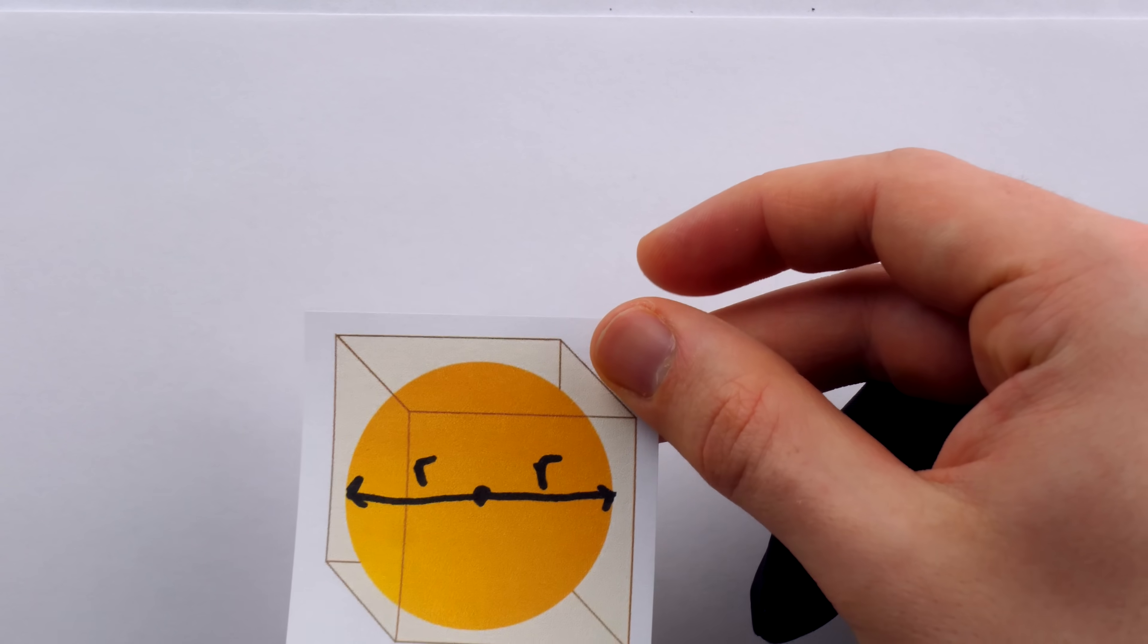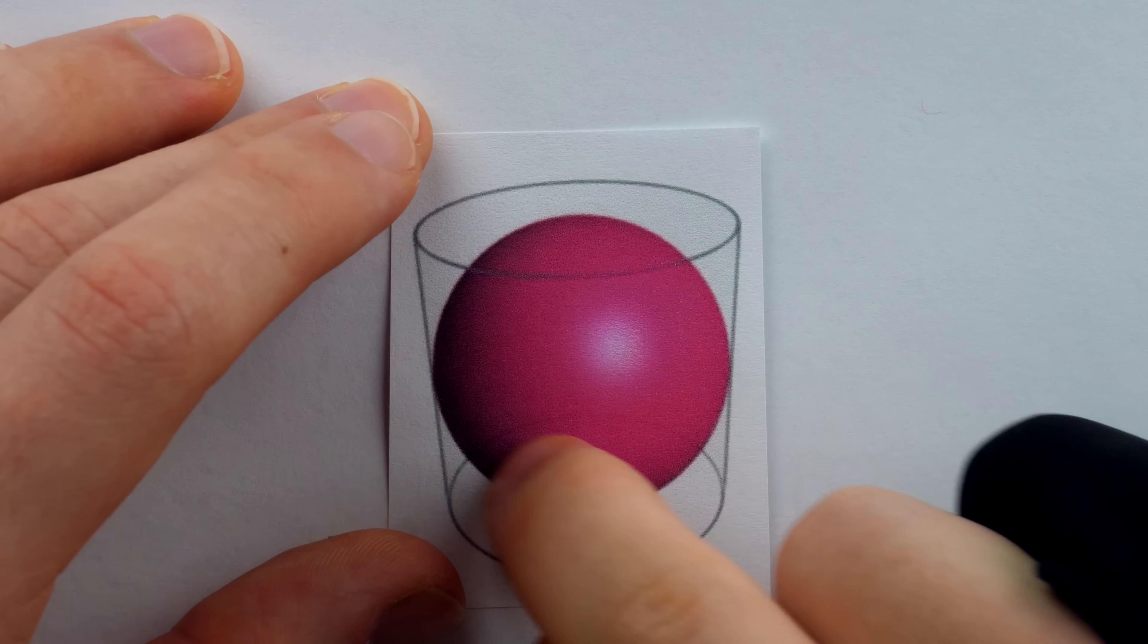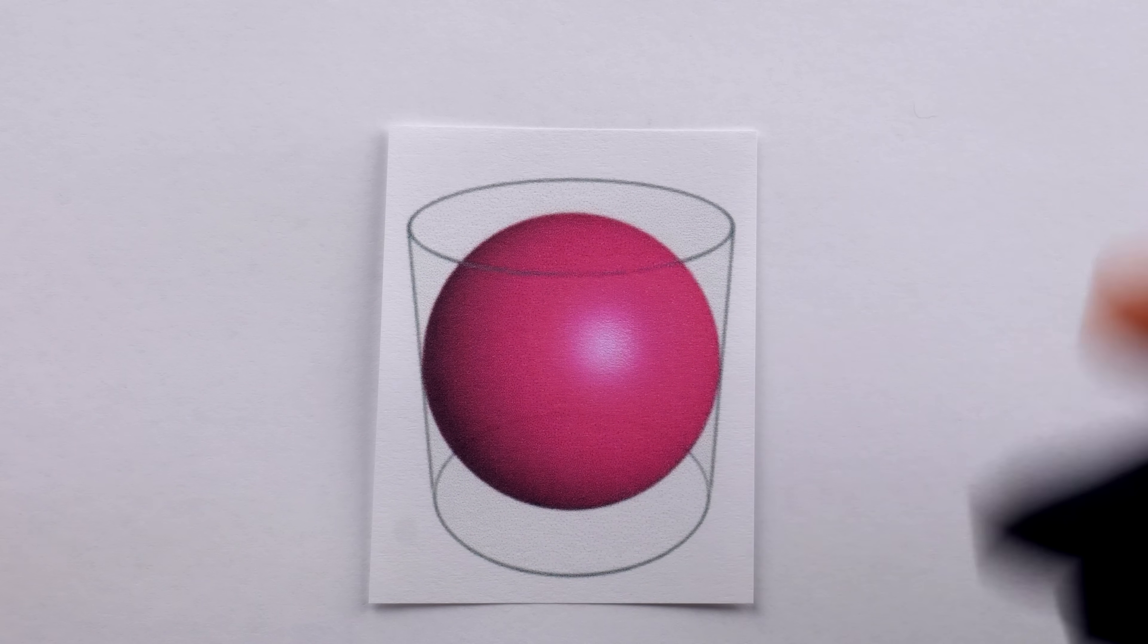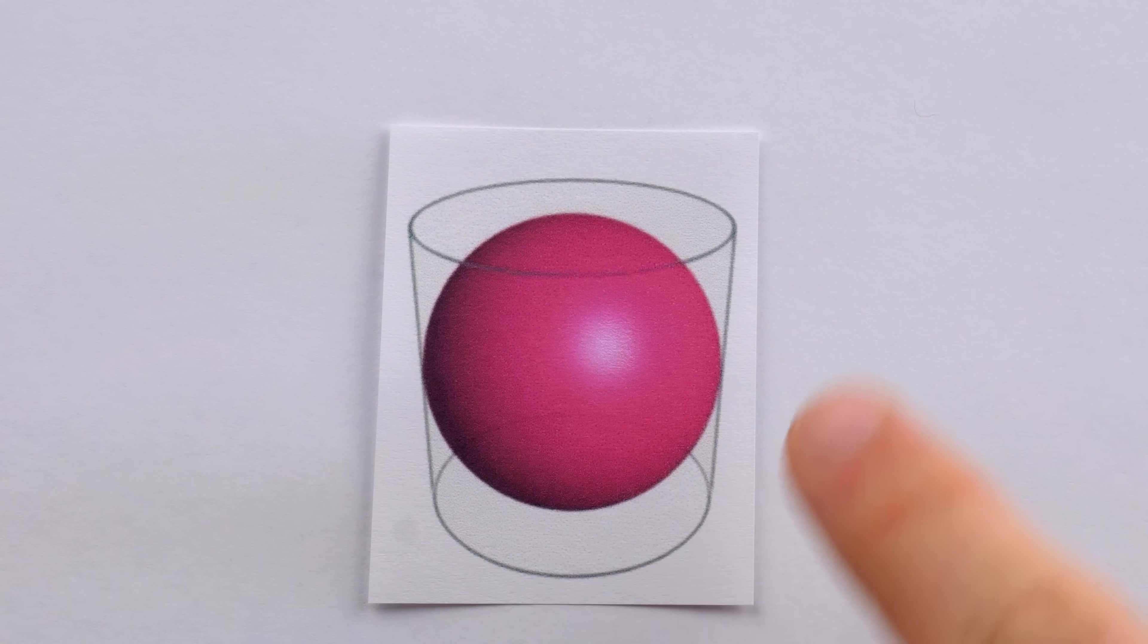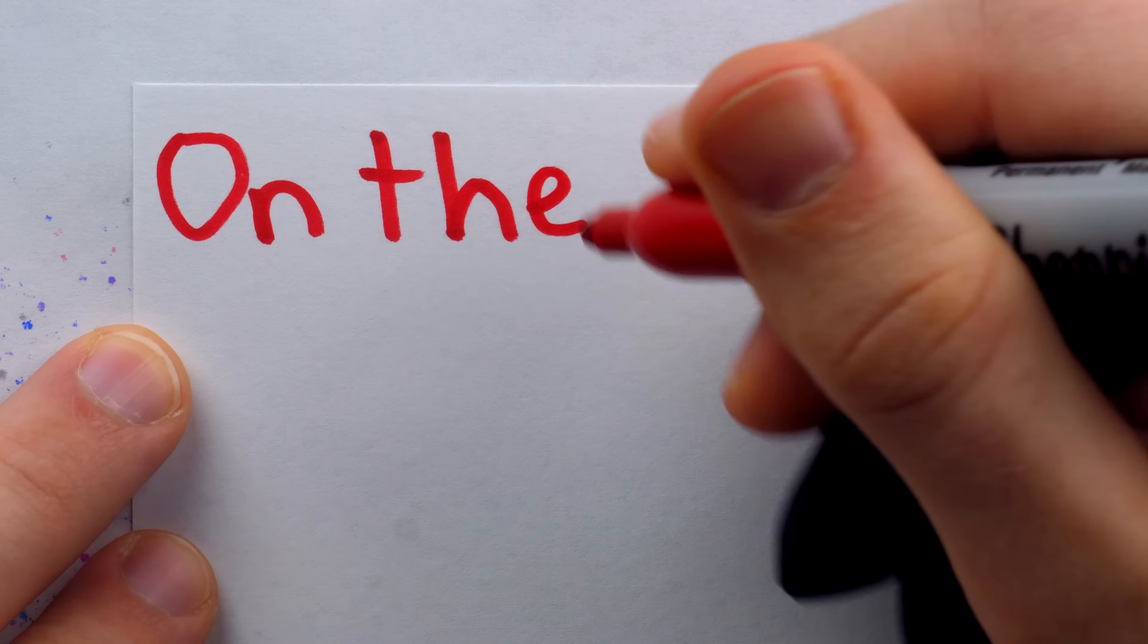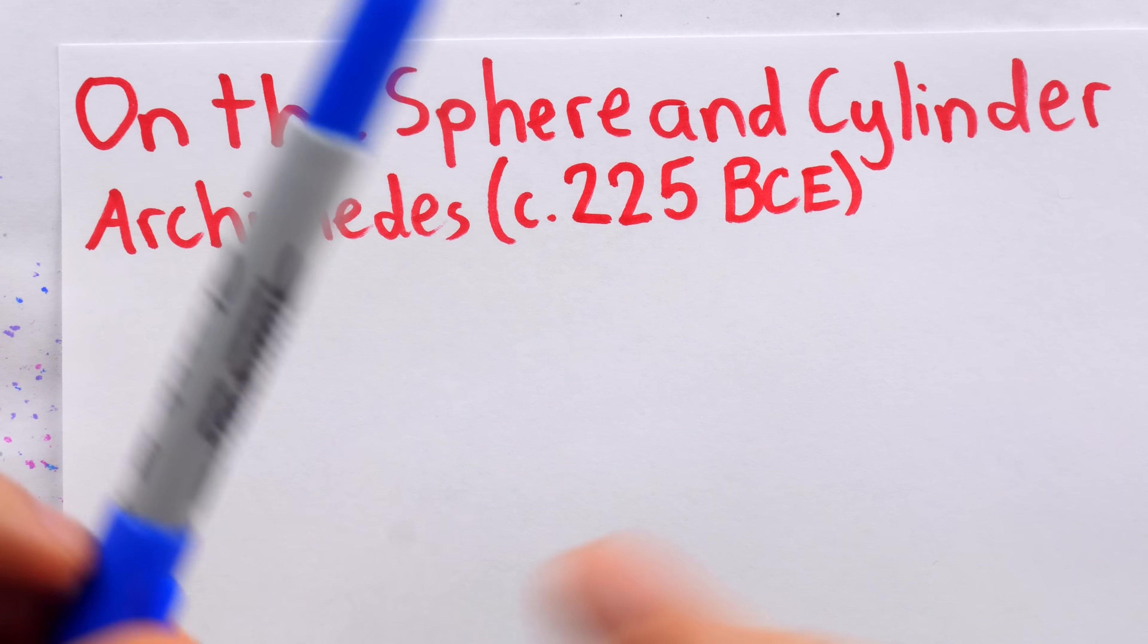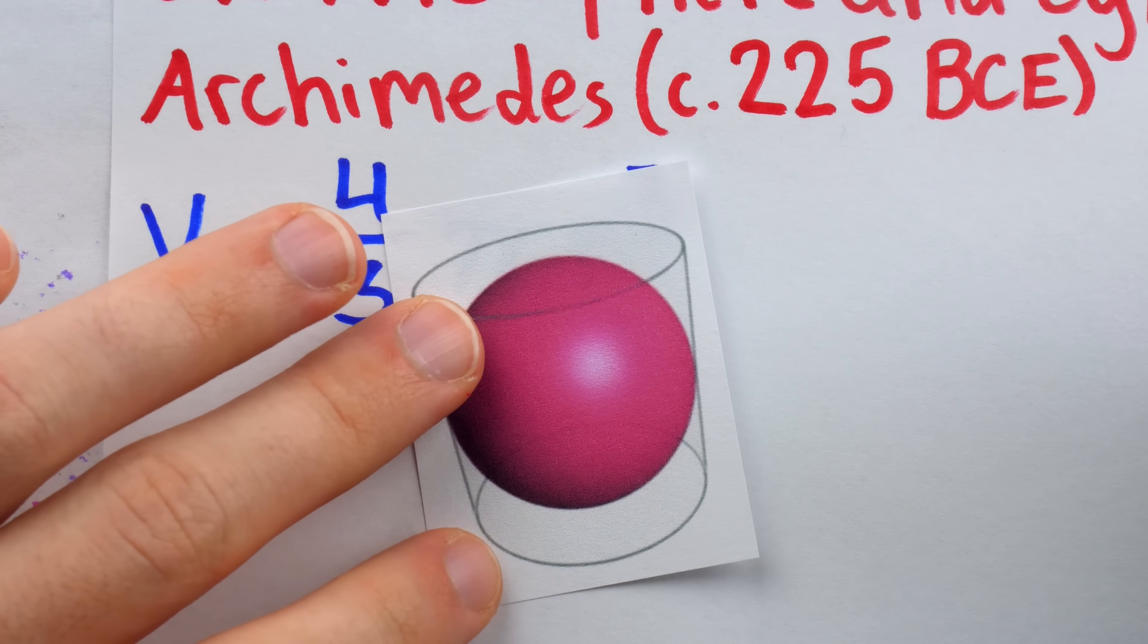What if instead of inscribing a sphere in a cube, we inscribed a sphere in a cylinder? What proportion of the cylinder's volume would be taken up by the sphere? It certainly looks like most of the cylinder's volume is taken up by the sphere. Maybe it's four-fifths, maybe 80%, something like that. But again, it only kind of looks that way because we're seeing areas, but we're trying to imagine the volumes. In around 225 BCE, Archimedes published a two-volume treatise titled On the Sphere and Cylinder. In this legendary work, Archimedes was the first to resolve this problem.